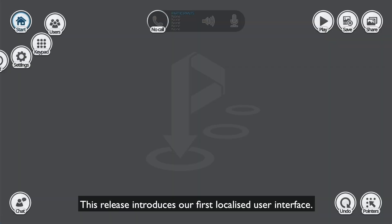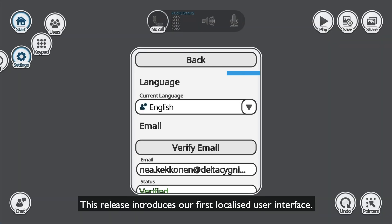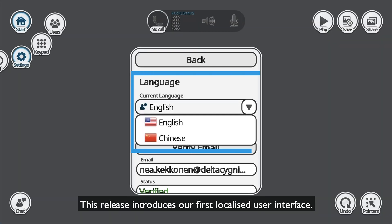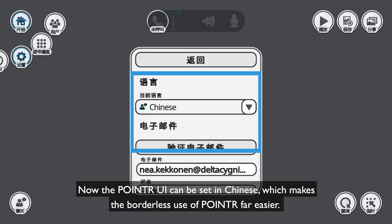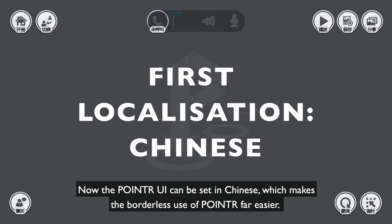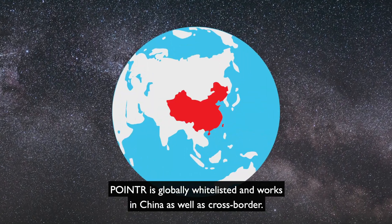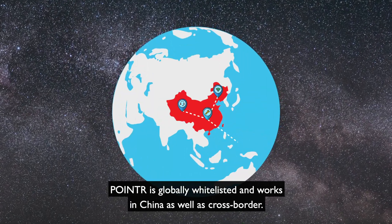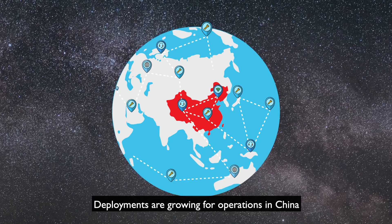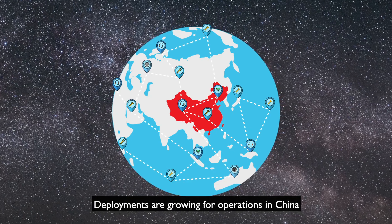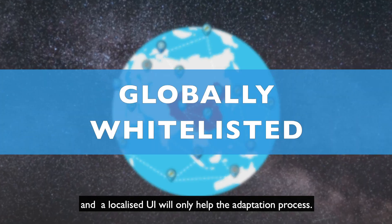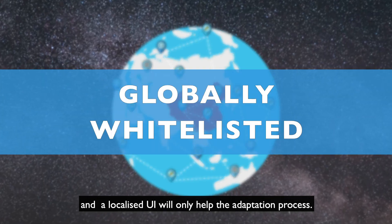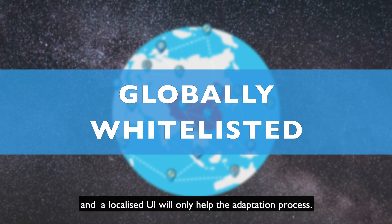This release introduces our first localized user interface. Now the Poynter UI can be set in Chinese, which makes the borderless use of Poynter far easier. Poynter is globally whitelisted and works in China as well as cross-border. Deployments are growing for operations in China and a localized UI will only help the adaptation process.